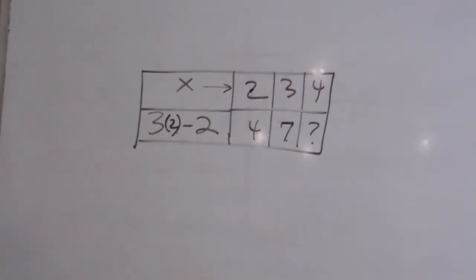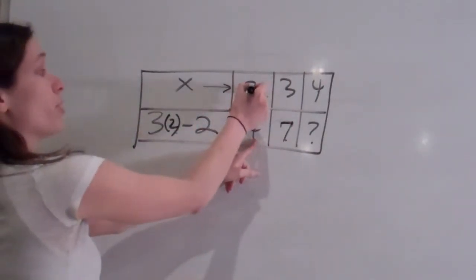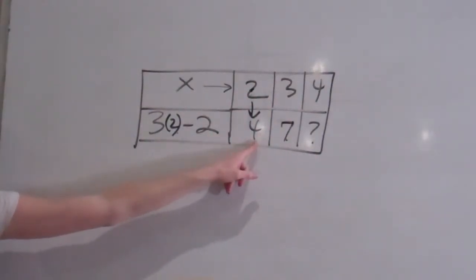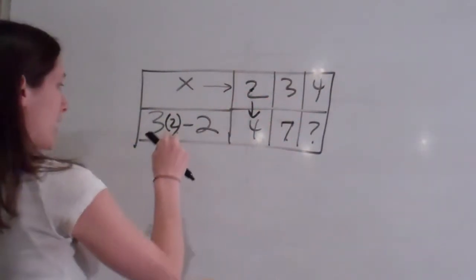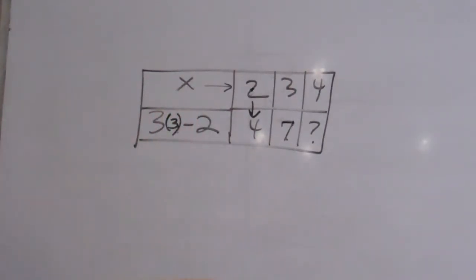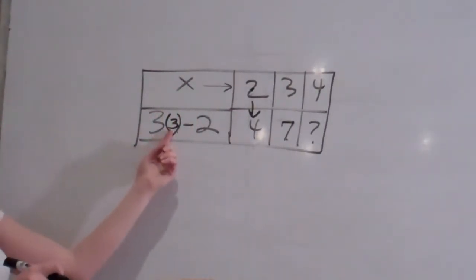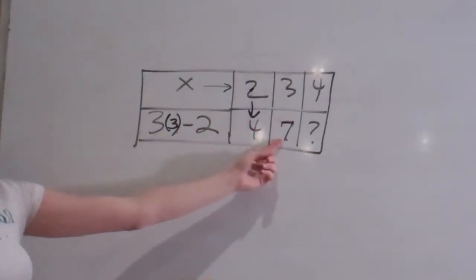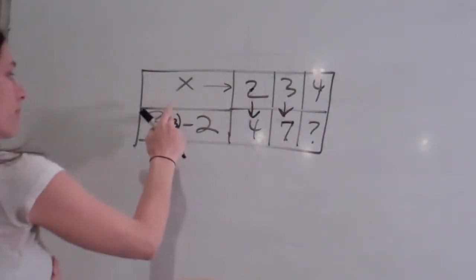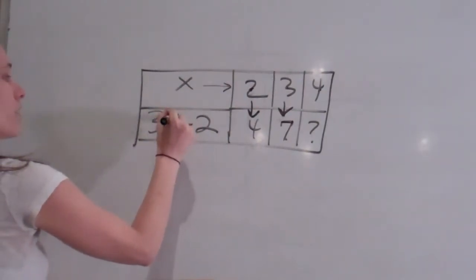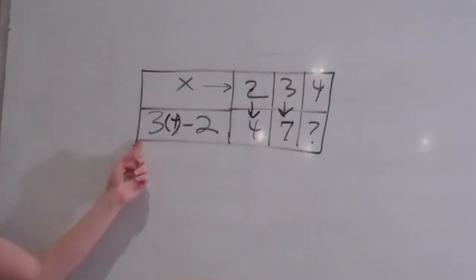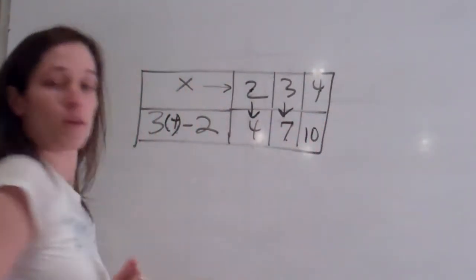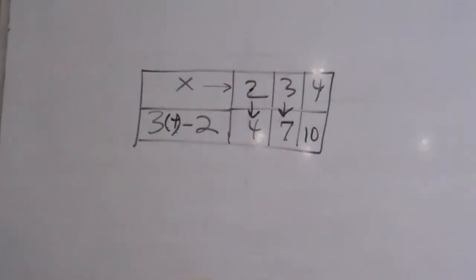So it would be three times. Three times two is six. Six minus two is four. So when we put two in there, we get four. Now let's try three. Three times three is nine. Nine minus two is seven. So that one's correct too. Let's try that one. Four times three is 12. Twelve minus two is 10. So we answered that by doing that. Everybody get it? That's really sweet.